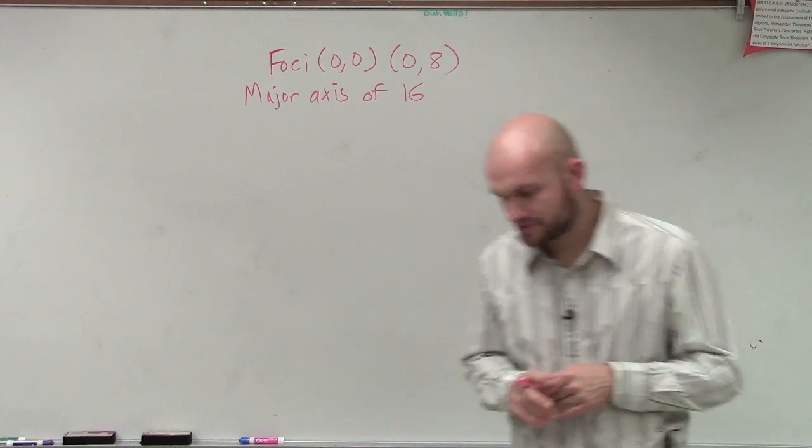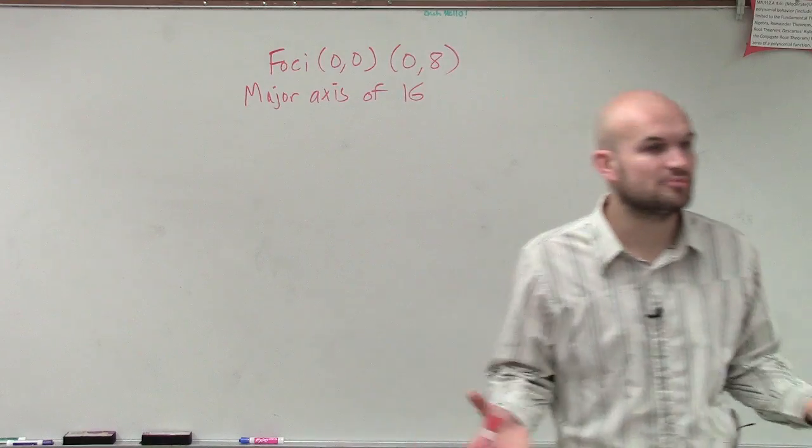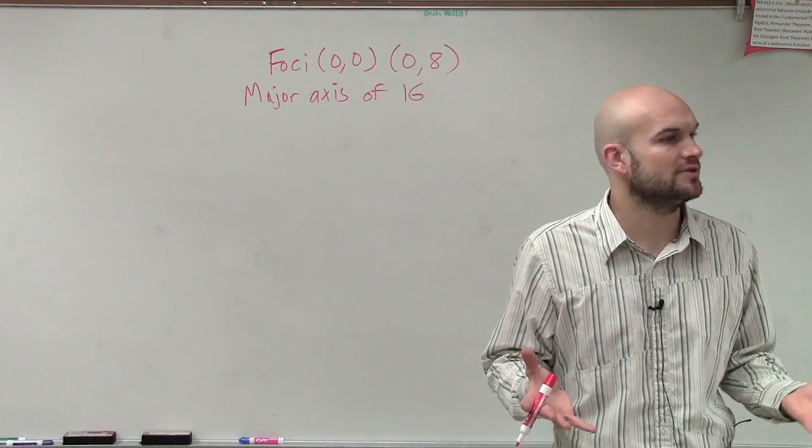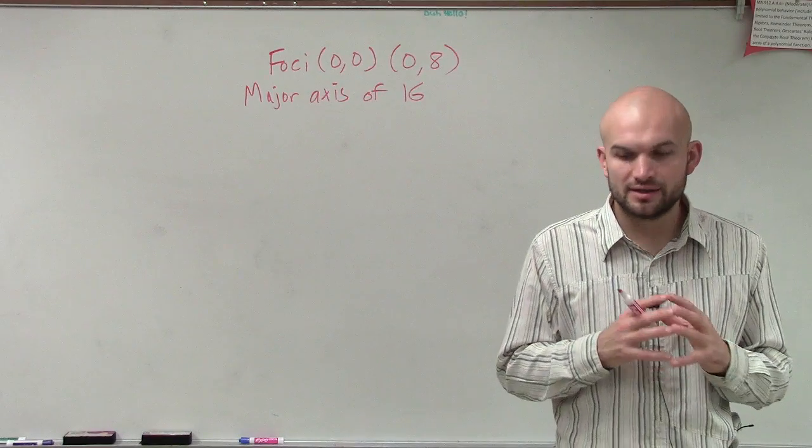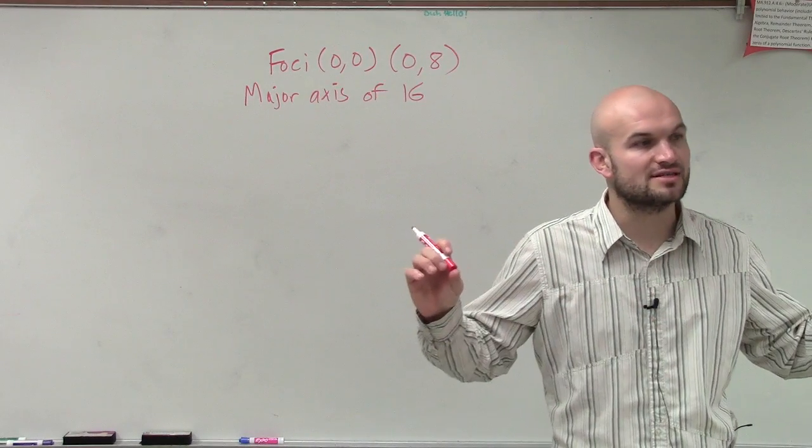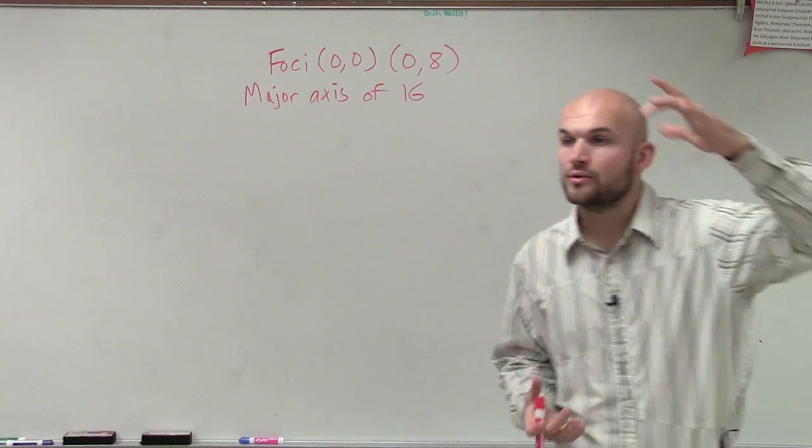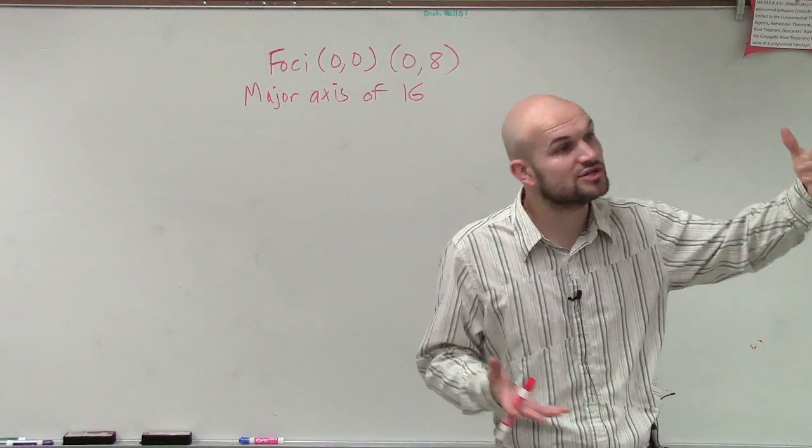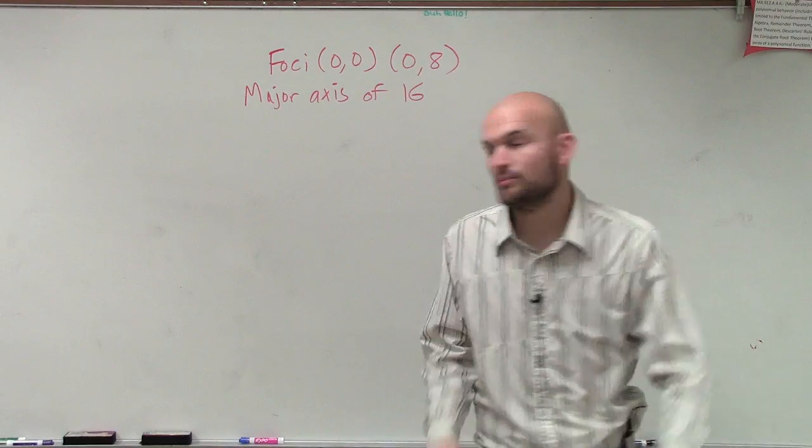So what we're going to do for this problem is the first thing is just plot the points. A nice little makeshift graph, and plot the points. Because the main important thing we want to do is determine: do we have an ellipse that's going to have a major axis of symmetry that's going to be horizontal, or are we going to have a major axis of symmetry that's going to be vertical? Because if we can determine between those two, that will tell us which formula we're going to want to use.